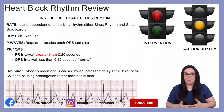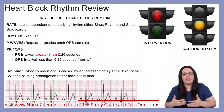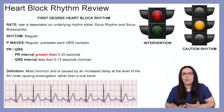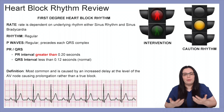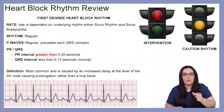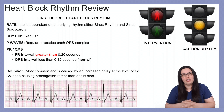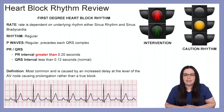To begin, we're going to be looking at our first degree heart block. The rate is dependent on the underlying rhythm but it's usually either sinus rhythm or sinus bradycardia. The rhythm will be regular and P waves will be regular as they will precede the QRS complex. The main difference with a first degree heart block is the PR interval will be greater than 0.2 seconds and will be consistent. QRS intervals will be less than 0.12 seconds, which is normal. This rhythm is most commonly caused by an increased delay at the level of the atrioventricular node, causing prolongation rather than a true block.